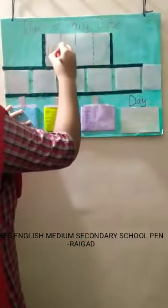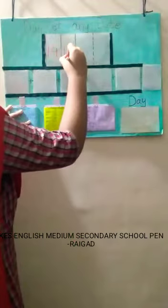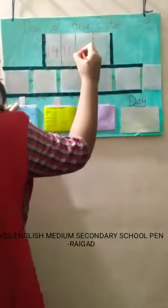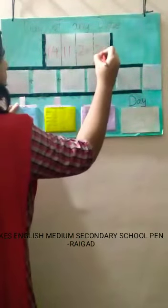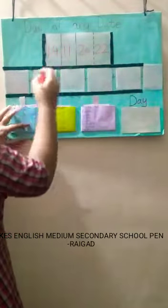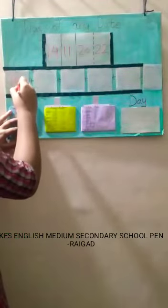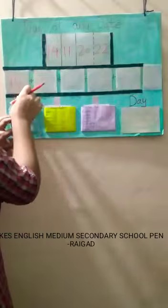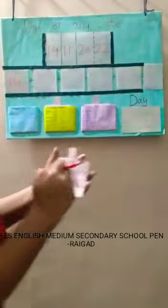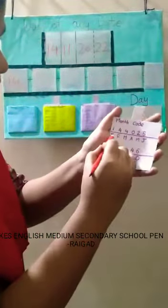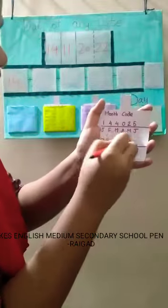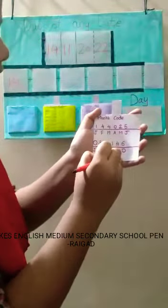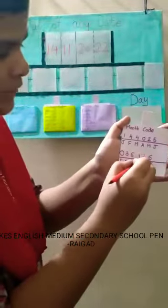We'll take 14 November which is children's day and the going on year. First we are going to write the date then the month. For month there are month codes like from January to December there are many different codes and 11 means November. For November it's 4.